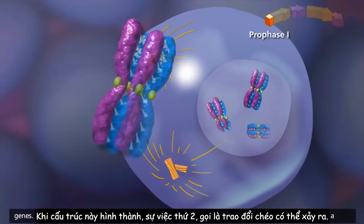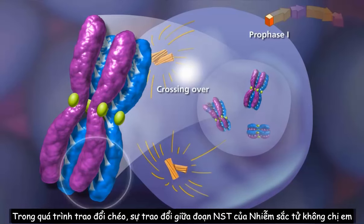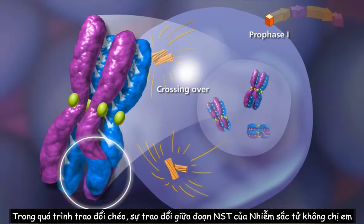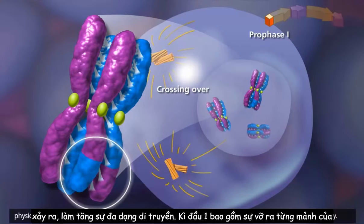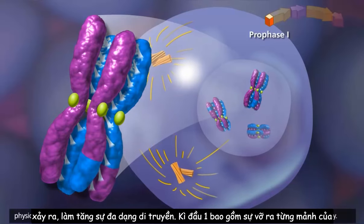Once this structure is formed, the second event, called crossing over, can occur. During crossing over, a physical exchange between chromosome segments of non-sister chromatids occurs, increasing genetic diversity.